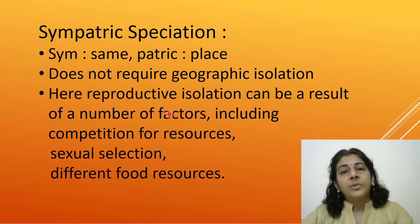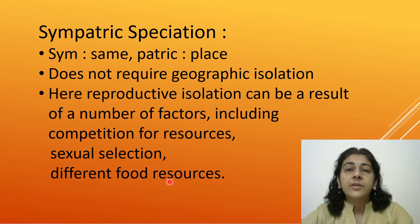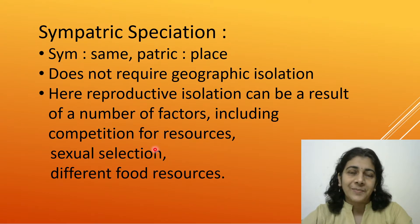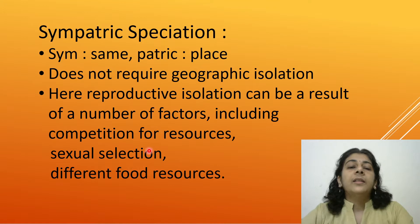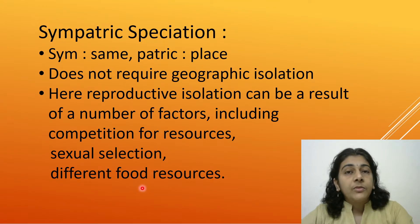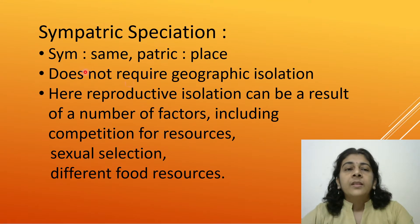When Sympatric Speciation occurs, the causes include competition for resources, sexual selection, or different food resources. So in the same place, when food resources become different for two organisms or competition for resources arises, that leads to Sympatric Speciation.